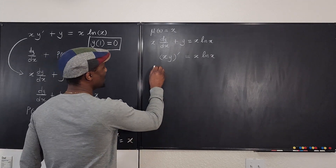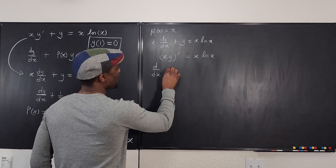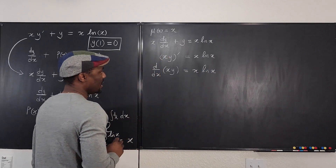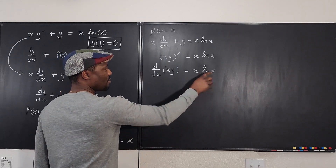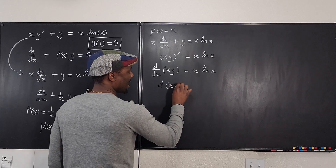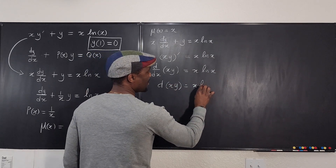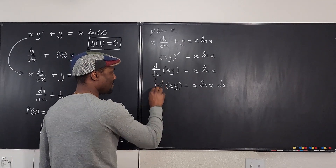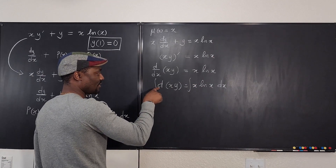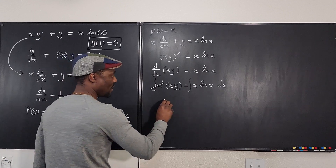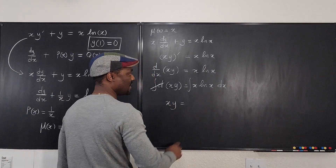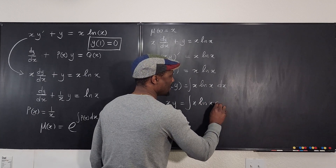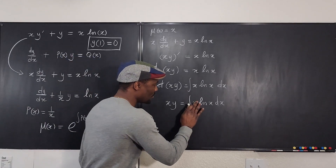This means d/dx of (xy) equals x times the natural log of x. We can multiply both sides by dx to get d(xy) equals x·ln(x) dx. Now we integrate both sides — the integral sign removes the d, leaving xy on the left, and we need to evaluate the integral of x·ln(x) dx on the right.